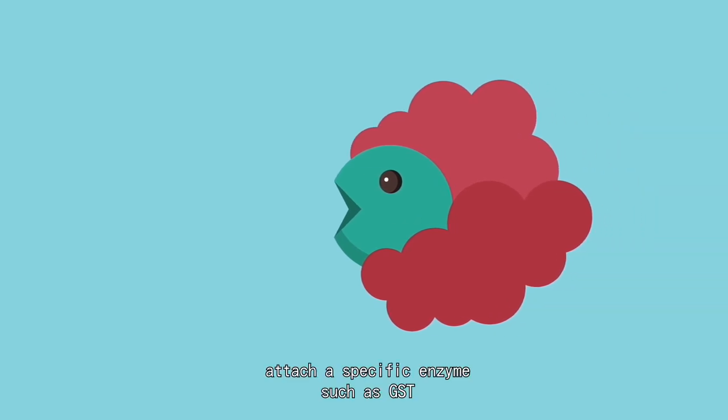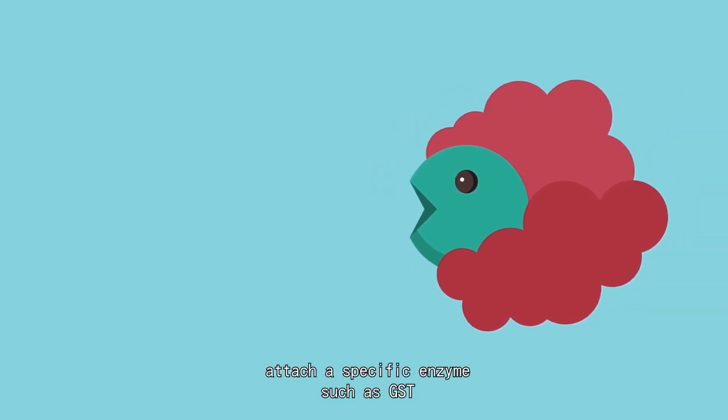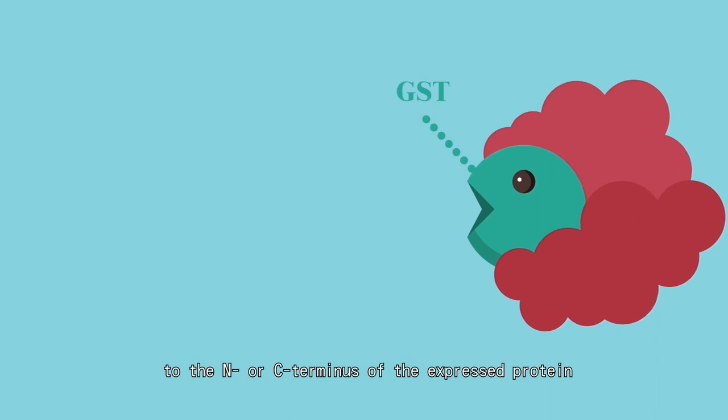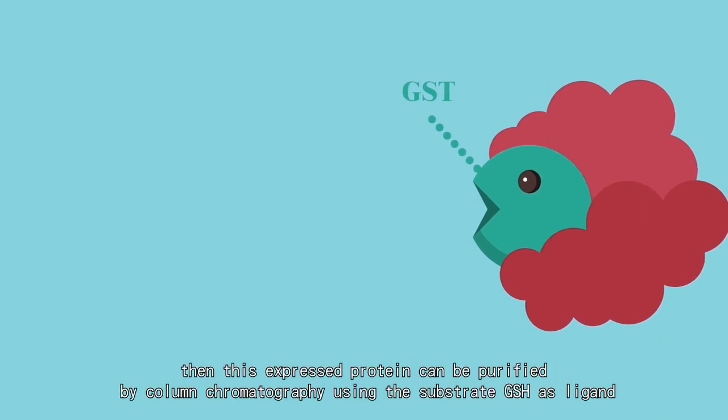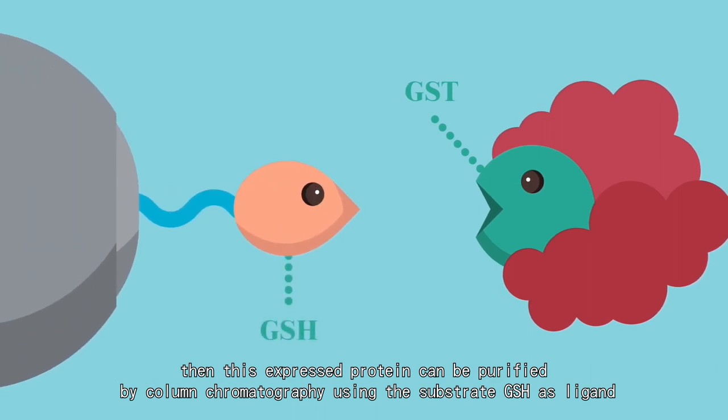Similarly, attach a specific enzyme such as GST to the N or C terminus of the expressed protein. Then this expressed protein can be purified by column chromatography using the substrate GSH as ligand.